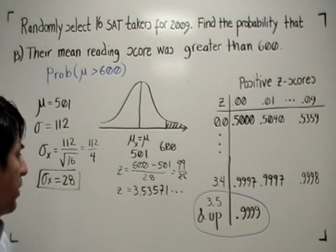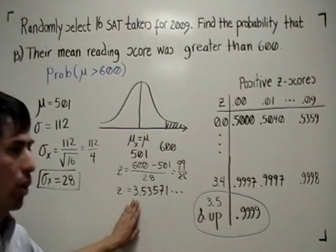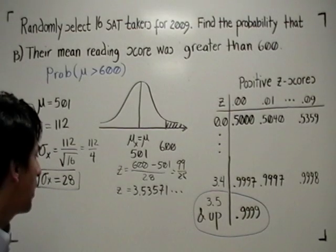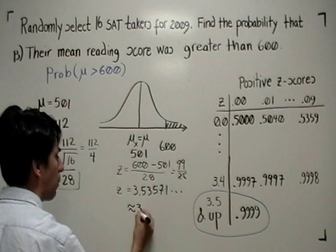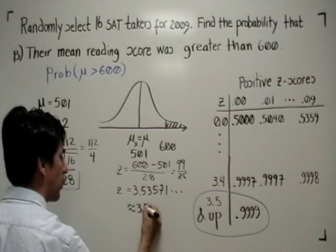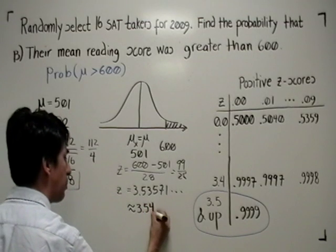Since our tables have a limitation that z-scores are only accurate up to the hundredths place, we round this off to the nearest hundredth. When we do that, we are going to get a z-score of approximately 3.54.